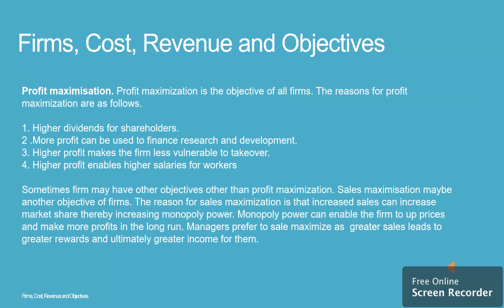Profit maximization is the objective of all firms. The reasons for profit maximization are as follows: 1. Higher dividends for shareholders. 2. More profit can be used to finance research and development. 3. Higher profit makes the firm less vulnerable to takeover. 4. Higher profit enables higher salaries for workers.